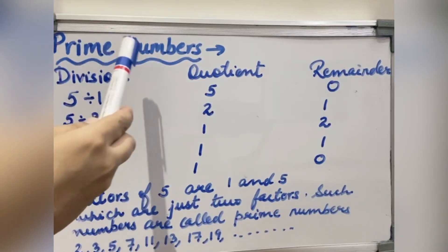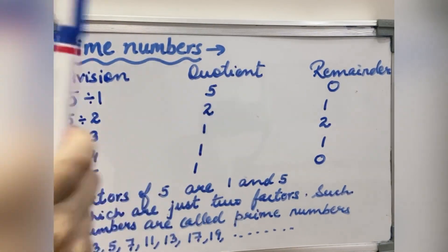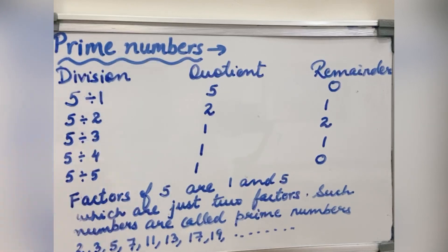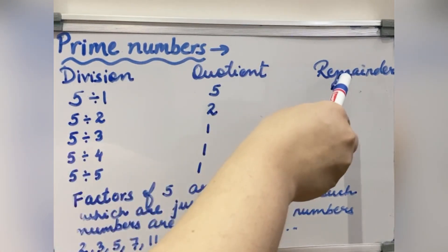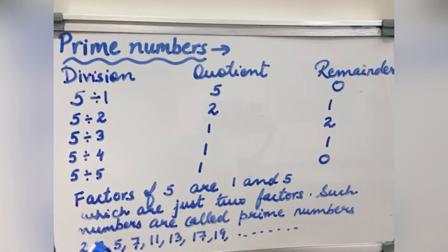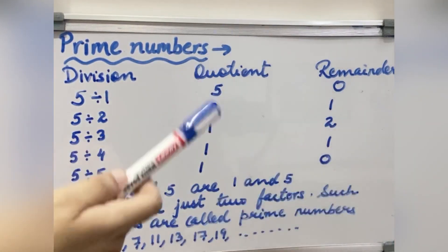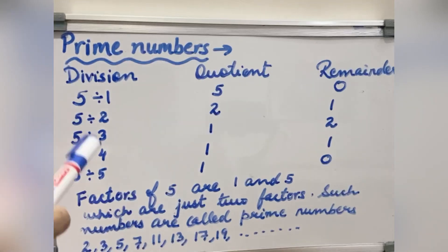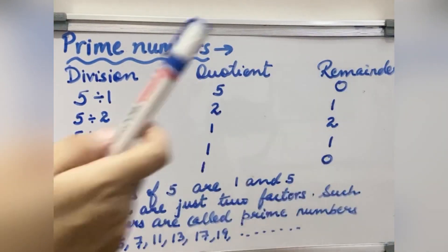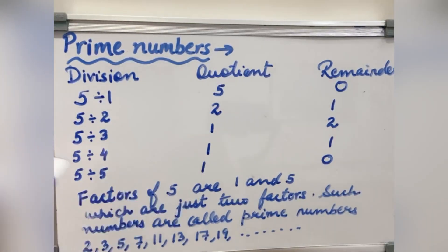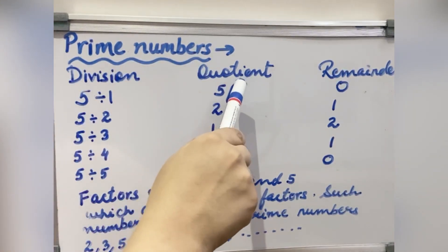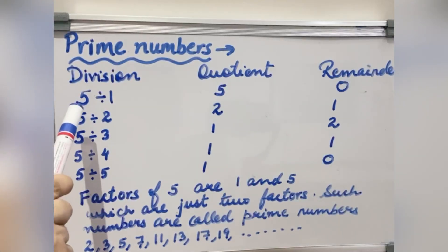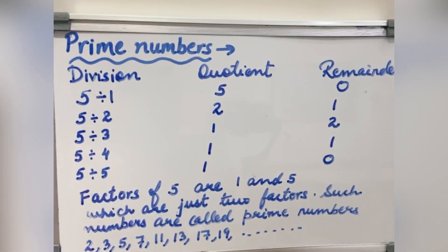Now how to find Prime Numbers? We can find Prime Numbers by checking through division. If we are getting more than 2 factors — meaning more than 2 numbers for which the remainder is 0 — then it is not a Prime Number. If we are getting only 2 factors where the remainder is 0, then we have a Prime Number. Let me take the number 5. I am taking division, quotient, and remainder. I am first dividing 5 by 1.